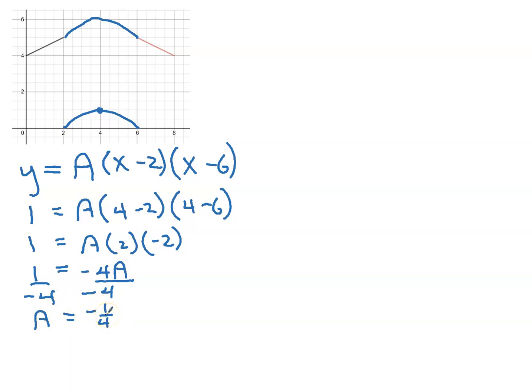So therefore, I now know the equation of that graph, which is y equals negative 1 quarter brackets x take 2, x take 6.